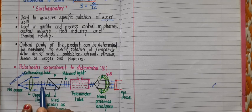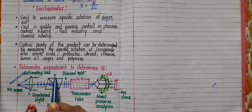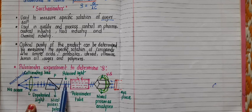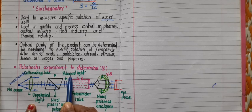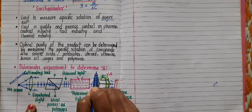Unpolarized light, denoted by dot and arrow, consists of vibrations in all possible planes and directions. This unpolarized light is incident on a Nicol prism, which is used as a polarizer. The ordinary ray is removed and only the extraordinary ray passes through. After passing through this polarizer, we get plane polarized light, indicated by arrows only.